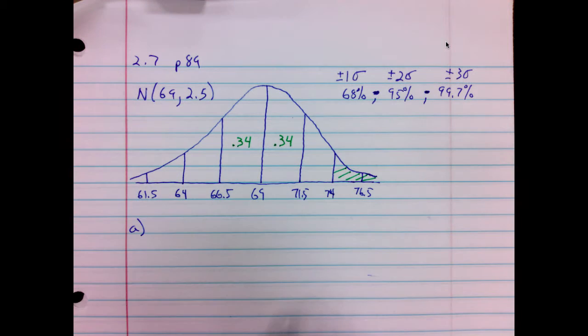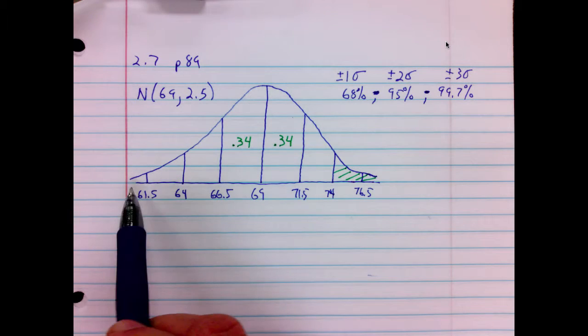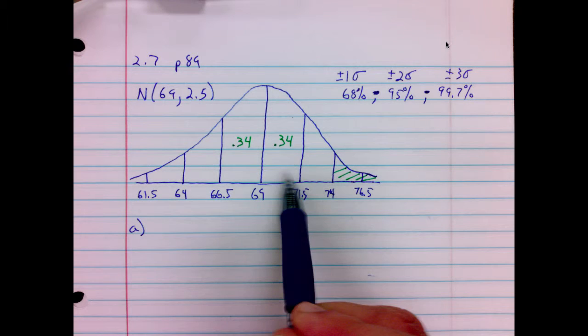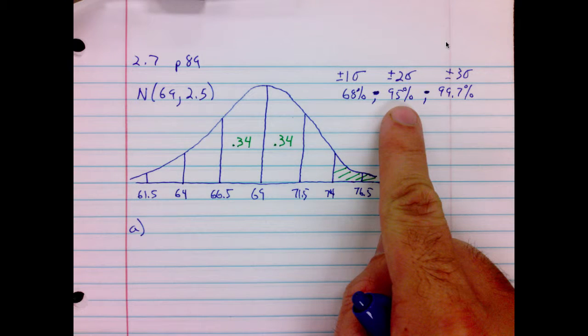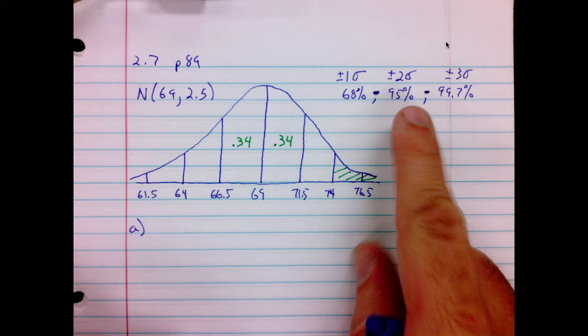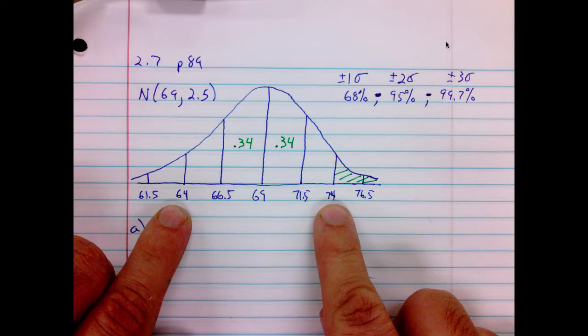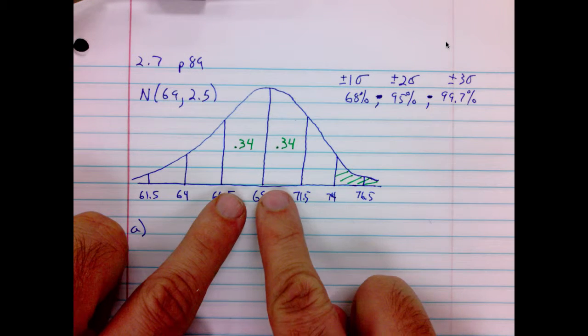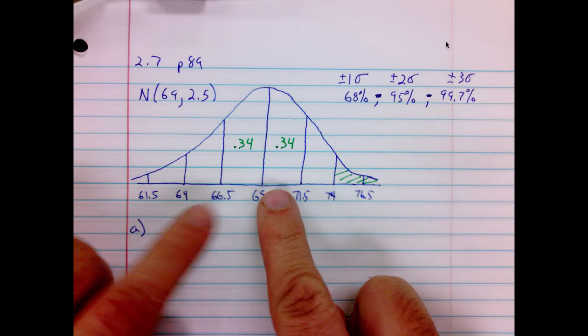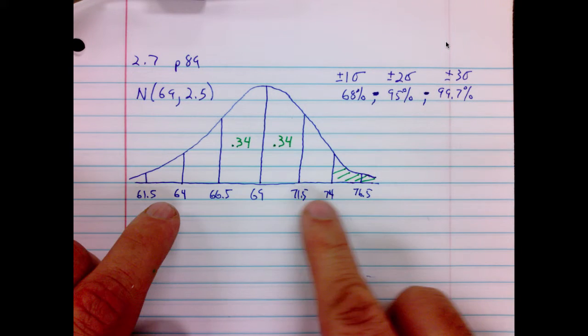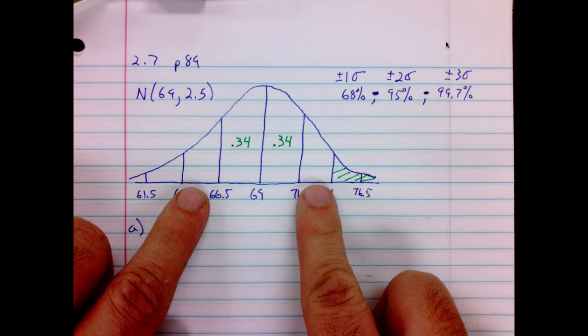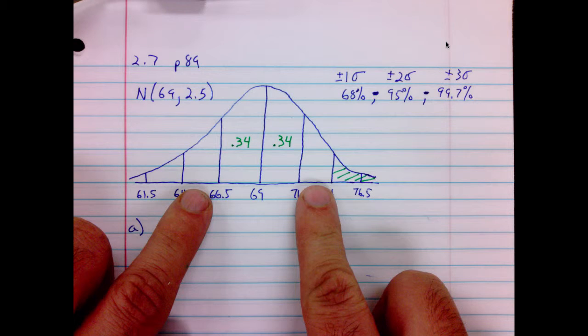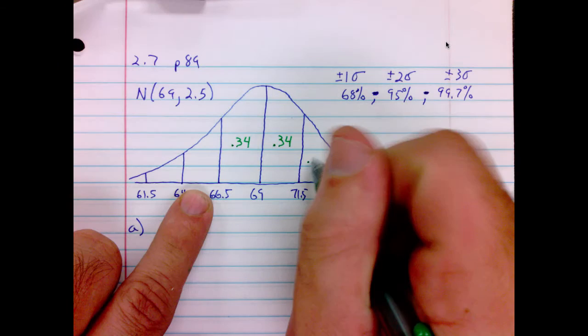Well, we know to the left of 69 is 50%. This area here is another 34%. Since 95% lie in two standard deviations, from 64 to 74 would be a total of 95%. Since we've used 68% already, 95 minus 68 is 27%, so these two areas here must sum to 27%. That means this side will be 13.5%.